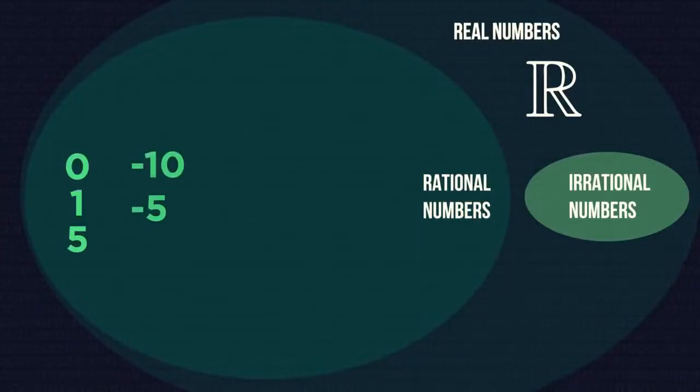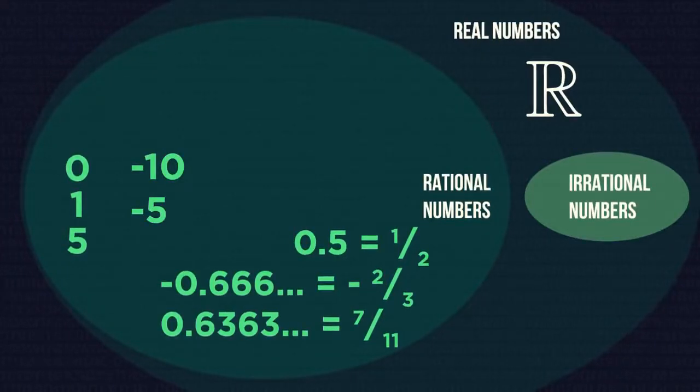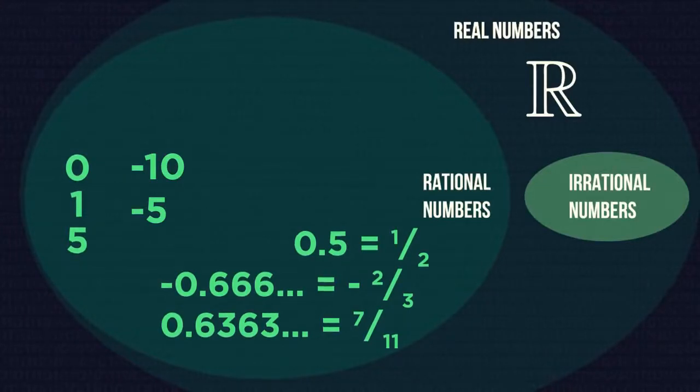So, any whole number, terminating decimals, recurring decimals. In fact, all numbers except for non-repeating decimals are rational.